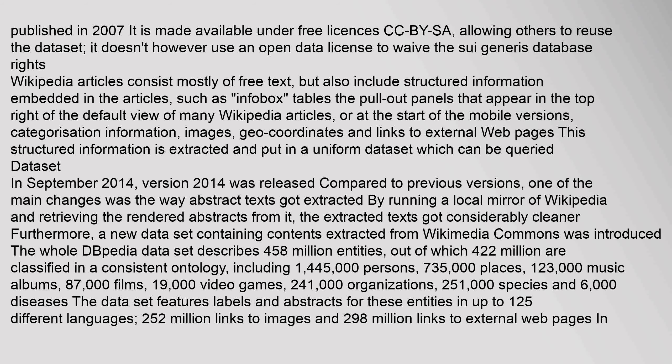Furthermore, a new dataset containing contents extracted from Wikimedia Commons was introduced. The whole DBpedia dataset describes 458 million entities, out of which 422 million are classified in a consistent ontology, including 1,445,000 persons, 735,000 places, 123,000 music albums, 87,000 films, 19,000 video games, 241,000 organizations, 251,000 species, and 6,000 diseases.